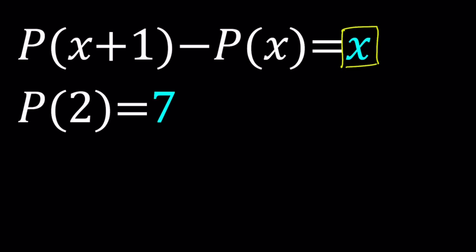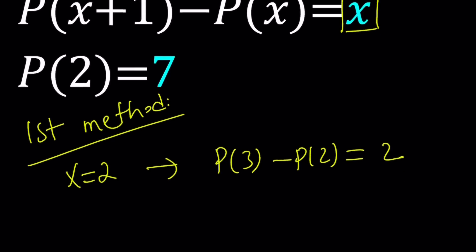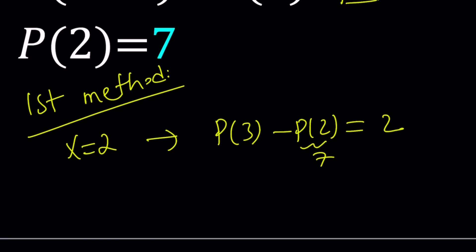So first method. The first method basically deals with substitution a lot, and substitution is fun, isn't it? Replace x with 2. You get P of 3 minus P of 2 equals 2. Now we know that P of 2 is 7, so from here we get P of 3 equals 9. Great. Let's go ahead and write it down here so we can keep it together.